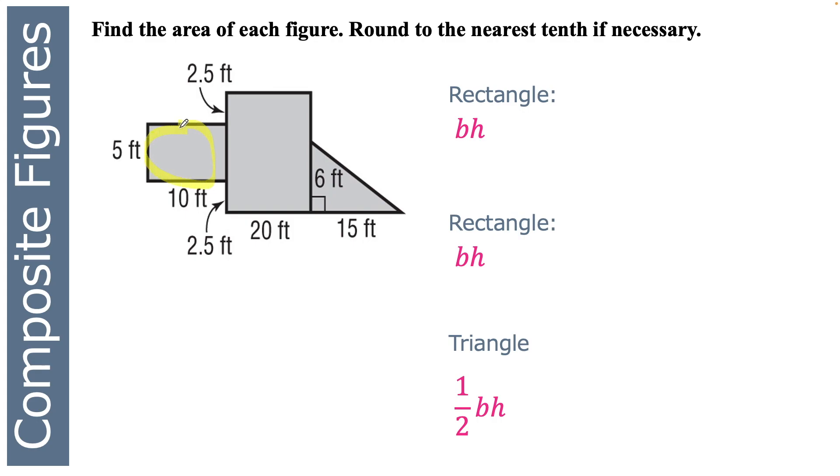We'll start with this guy here. So base times height, 5 times 10 is 50. And then the next one, I need base times height. I know the base is 20, but how do I find the height? I know that this middle piece is 5 because of the height of this triangle, and then another 2.5 and another 2.5. So this whole height right here is 10. So now I know this rectangle in the middle is 20 times 10, which is 200.